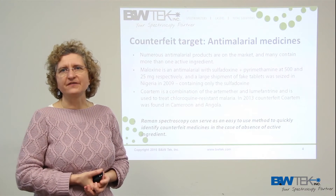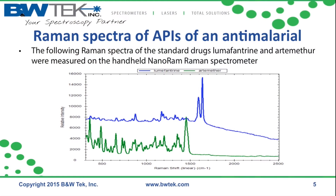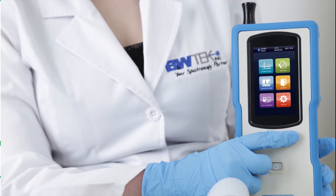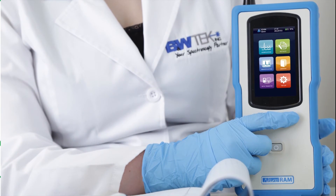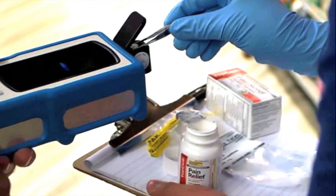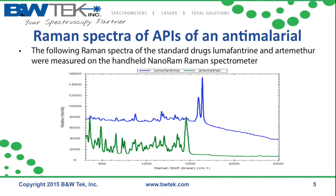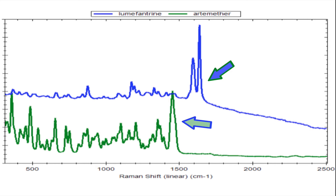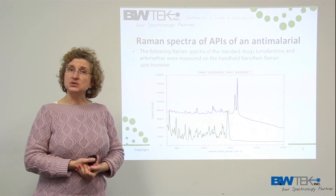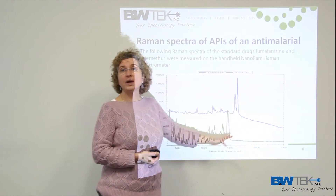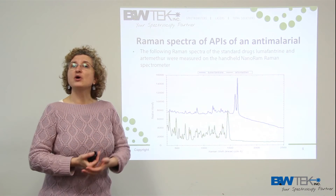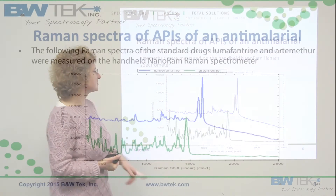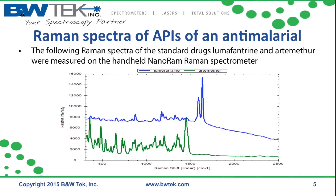What can we do to help identify these counterfeit drugs? One approach is the use of Raman spectroscopy, which is easy to use and portable — it can be taken to the field to quickly identify counterfeit medicines in the absence of active drug products. Shown here are the Raman spectra of the active ingredients of a particular antimalarial, measured on the handheld NanoRAM. There is very strong Raman signal for both lumefantrine and artemether, and the main peaks for these two active ingredients are quite separated from each other, so both should be clearly detectable in a properly formulated tablet.